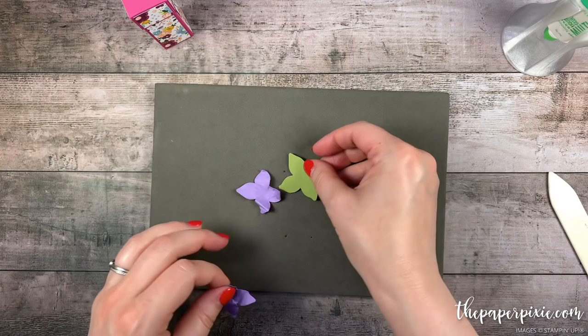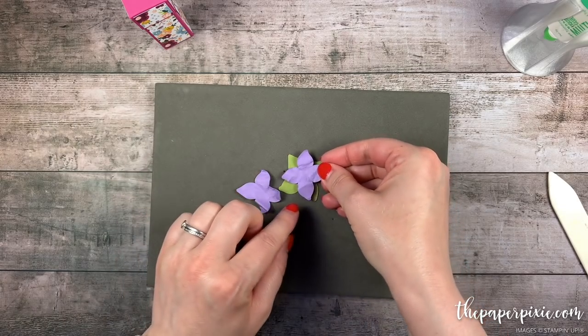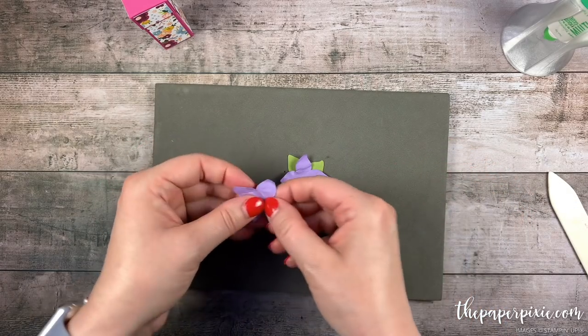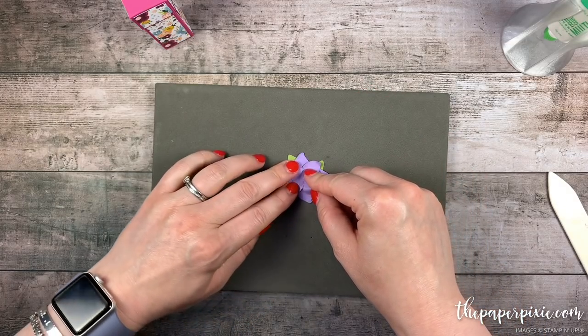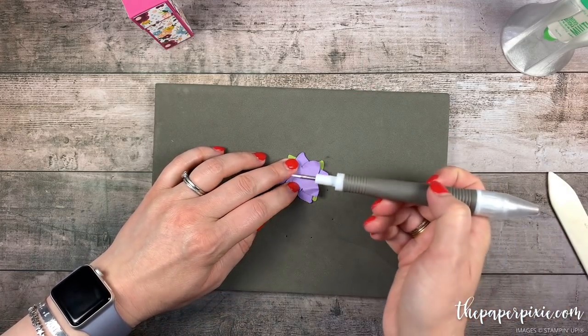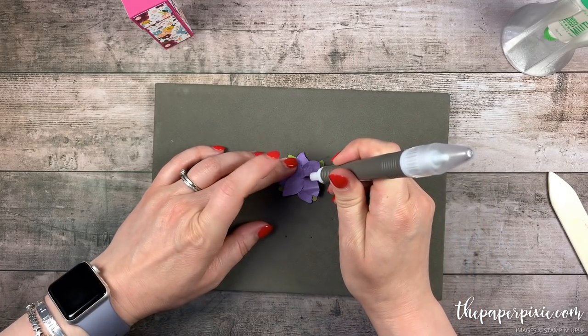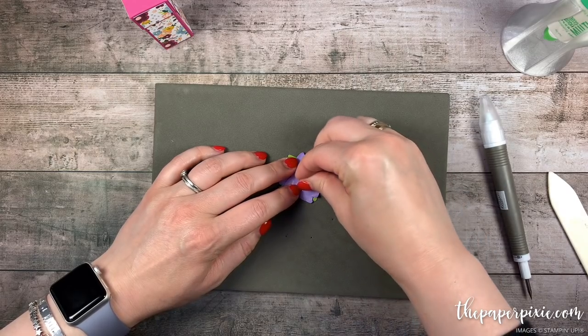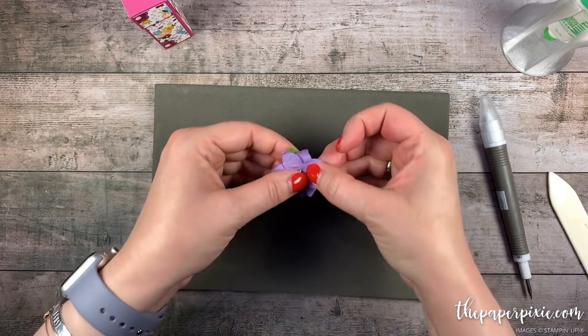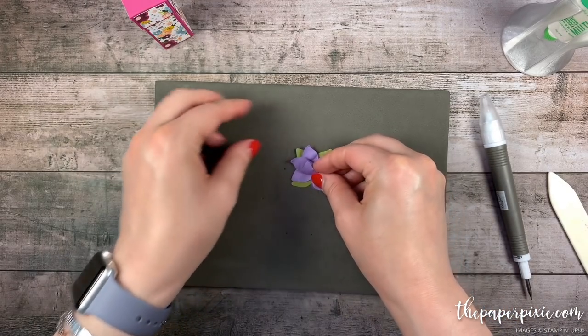Then I'm going to layer first the Old Olive piece on the bottom and then we're going to just stagger the two Highland Heather pieces. So we're creating something like a flower here. I'm going to grab the piercing end of my take your pick tool and then I'm just going to put a silver brad in the center like so. There's our little flower.